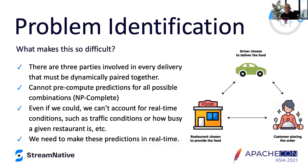Why is that problem difficult? There are basically three parties involved in every delivery that are dynamically paired together. We can't pre-compute all predictions for all possible combinations — it's an NP-complete data set. We don't know which restaurant will be chosen, which driver will be chosen, or when and where customers will place orders. Even if we could theoretically generate a batch prediction, it couldn't account for real-time conditions such as traffic, how busy a restaurant is, or lead time on preparing a meal at a given time of day. So all this tells us we have to make these predictions in real time.